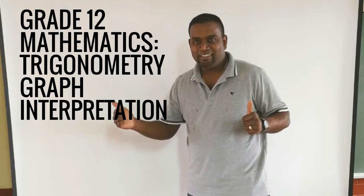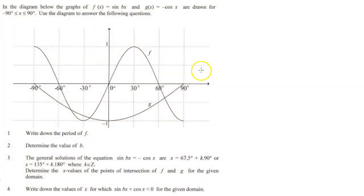In this video we're going to be looking at trig graph interpretation. This question is adapted from a past examination question at grade 12 level. In the diagram below, the graphs of f(x) = sin bx and g(x) = -cos x are drawn for the domain -90° to 90°. Use the diagram to answer the questions that follow.